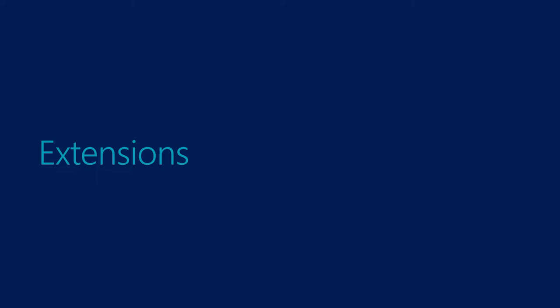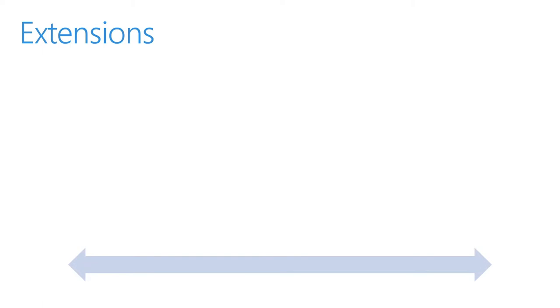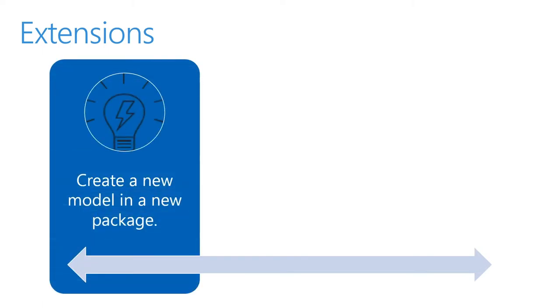Next, we will discuss the new concept of extensions. When we create a model in a new package, this indicates that it is a new separate assembly. Our model or package can reference other packages and models, and therefore other elements. However, a specific element can only exist in one model. So we can reference the Venn table from the application suite model in our new model, but we cannot customize that element as part of the application suite model.